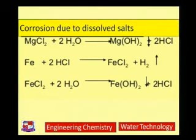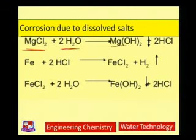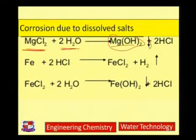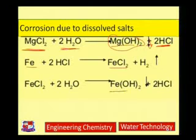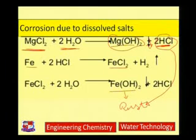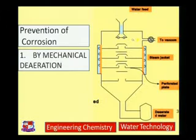Corrosion due to acid formed from dissolved salts — hardness-causing salts like magnesium chloride and magnesium sulphate undergo hydrolysis and form magnesium hydroxide, which is deposited as scale. But the acid formed here causes boiler corrosion. This acid may dissolve iron of the boiler in the form of FeCl₂, which gets converted to Fe(OH)₂ and finally into rust. Even a small amount of magnesium chloride can lead to formation of HCl, and this HCl may result in rusting of the boiler.